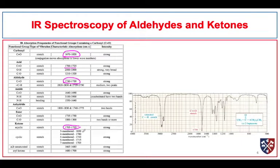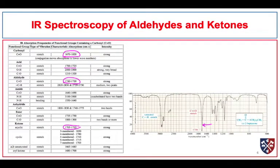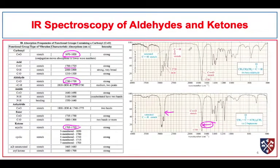Here we see 2-heptanone, and it has a large absorption at 1718 with no other really distinguishing features. We see some C-H stretching in the C-H stretching region, but this large peak somewhere around 1700 is what tells us that we have a ketone.